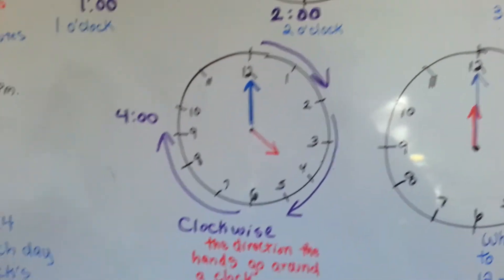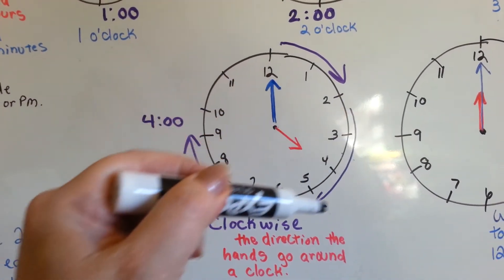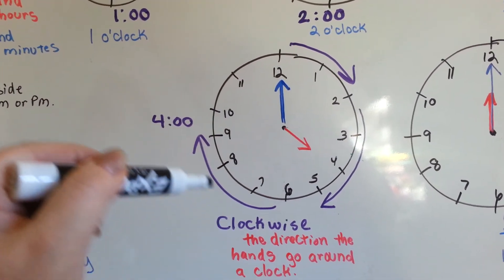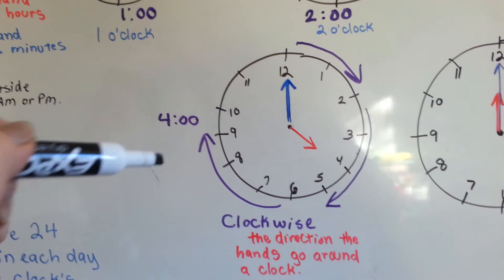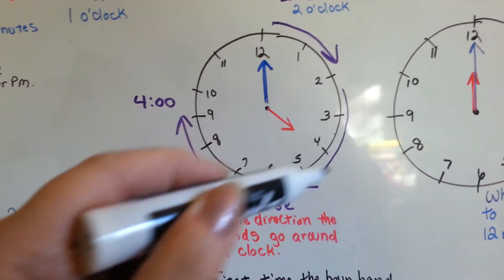Now, the other thing you need to know is the clocks can only go in this direction. They only go around this way. If they go around the other way, the clock is broken because they only go around this way. That's called clockwise.